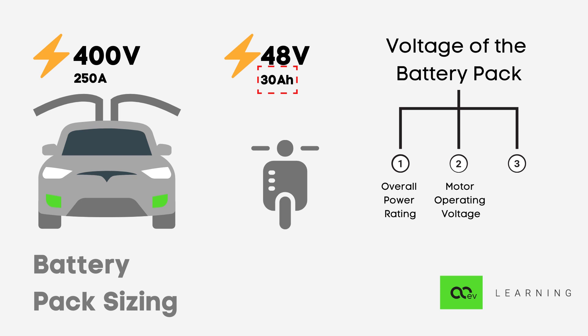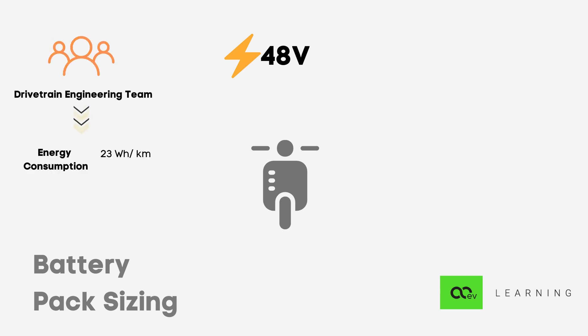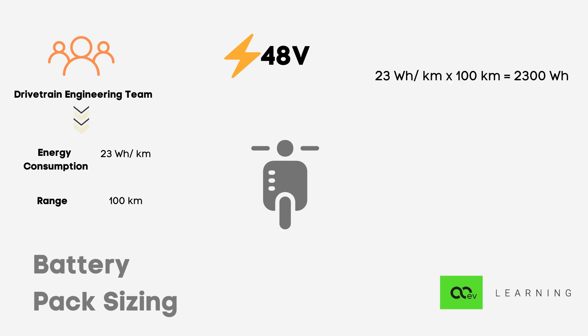For capacity calculation, we need the energy consumption parameter, represented in watt-hour per kilometer. This parameter is given by the powertrain team to the battery team. Let's say we get an input of 23 Wh/km, equivalent to a normal Activa-type scooter. If we want a range of 100 kilometers, we multiply energy consumption by range: 23 × 100 = 2300 watt-hours. Dividing by the operating voltage of 48 volt gives 47.9 Ah, rounded off to 48 Ah. So the overall battery pack spec is 48 volt 48 Ah.